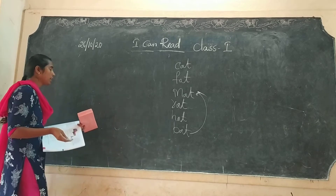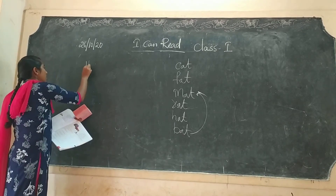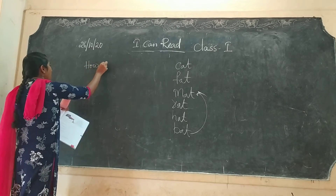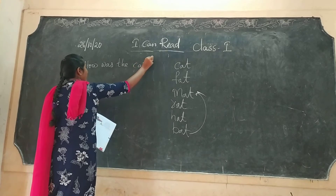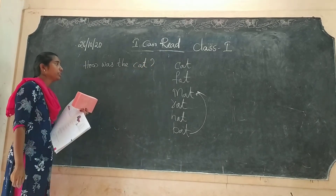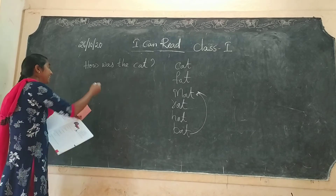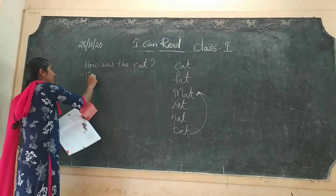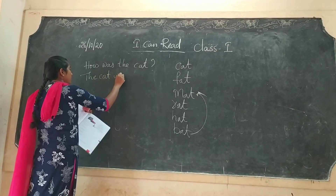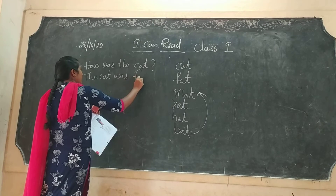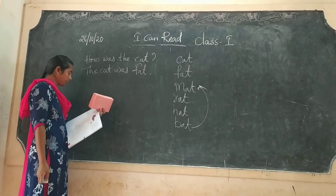You have a question — answer the question. How was the cat? How was the cat? The cat was fat. The cat was fat. It can be said now.